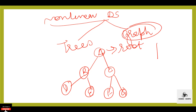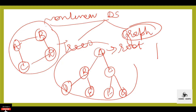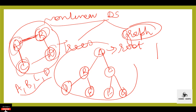Next is graph. Graph is a nonlinear data structure with a finite number of vertices and edges, where edges are used to connect the vertices. The main difference between tree and graph is that there is no cycle in a tree but there is a cycle in a graph. For example, A, B, C, D are the vertices and A-to-B, A-to-C, C-to-D, and B-to-D are the edges.